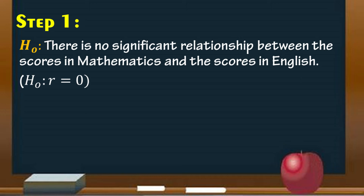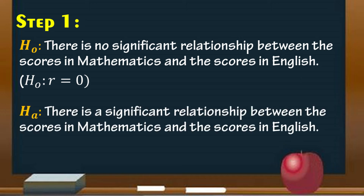The alternative hypothesis, H sub A, states that there is a significant relationship between the scores in mathematics and the scores in English. Since there is significance between the two variables, then R must not be equal to 0.